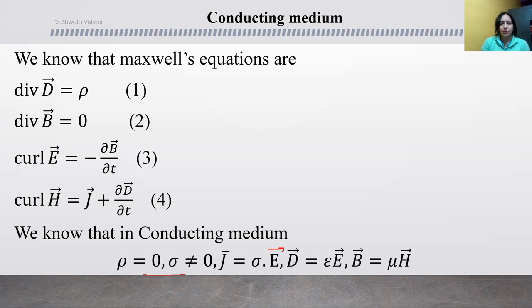If we make this non-conducting, J will be zero and sigma will be zero. Then we will derive accordingly. The method is the same as for free space.